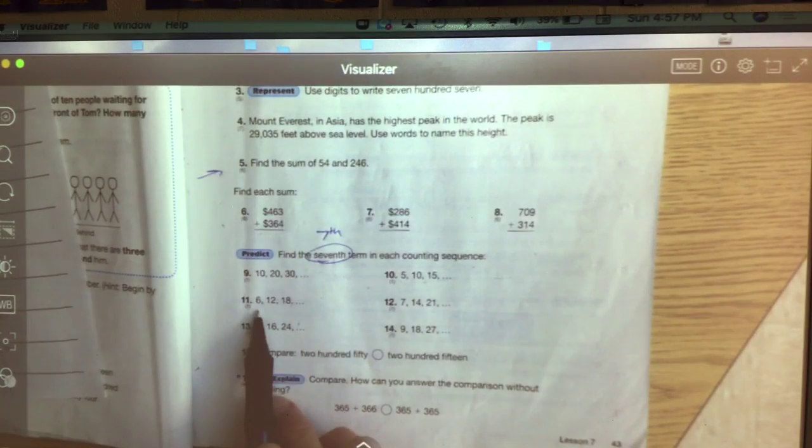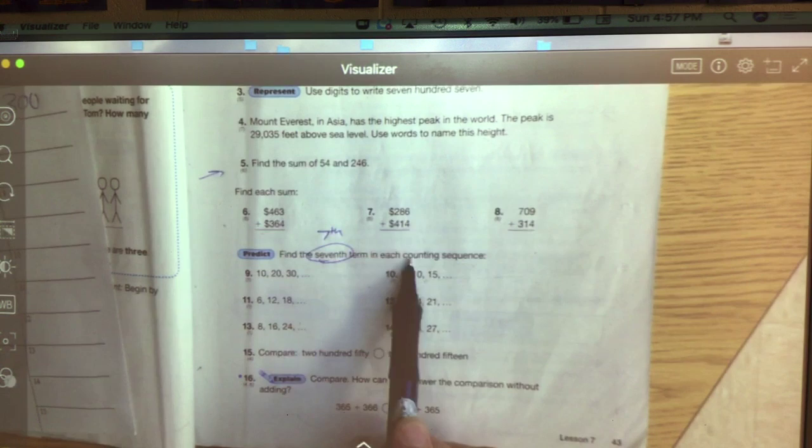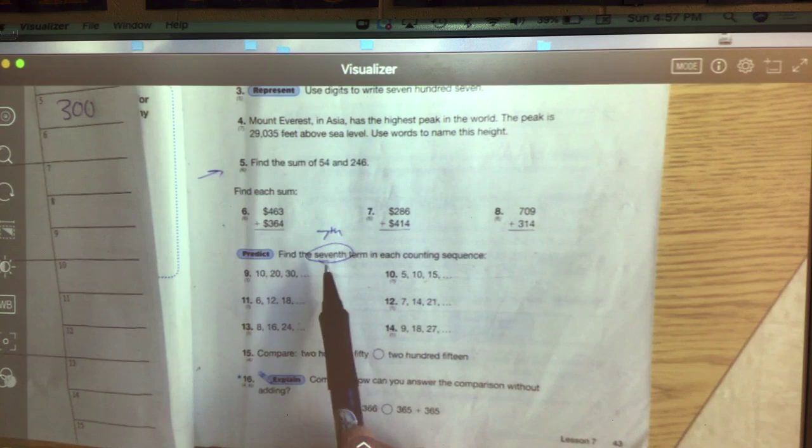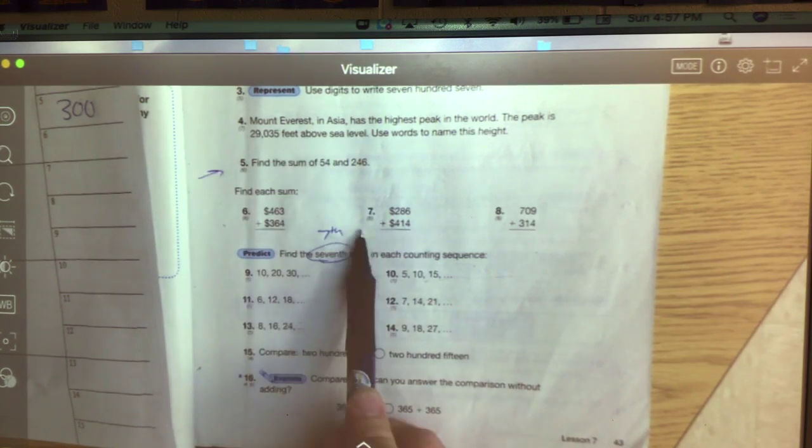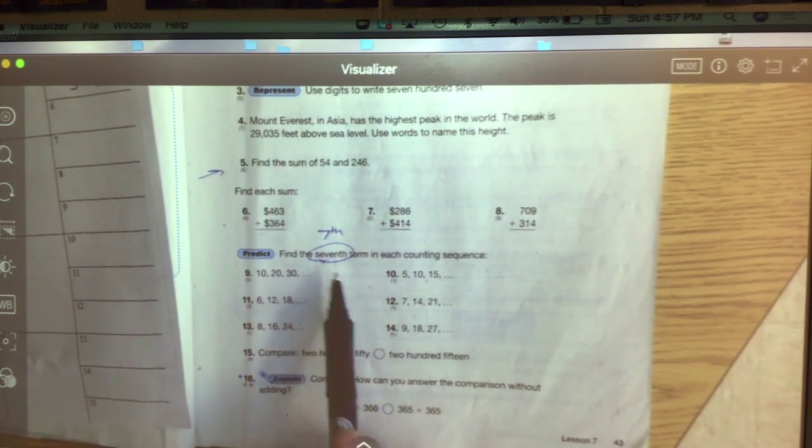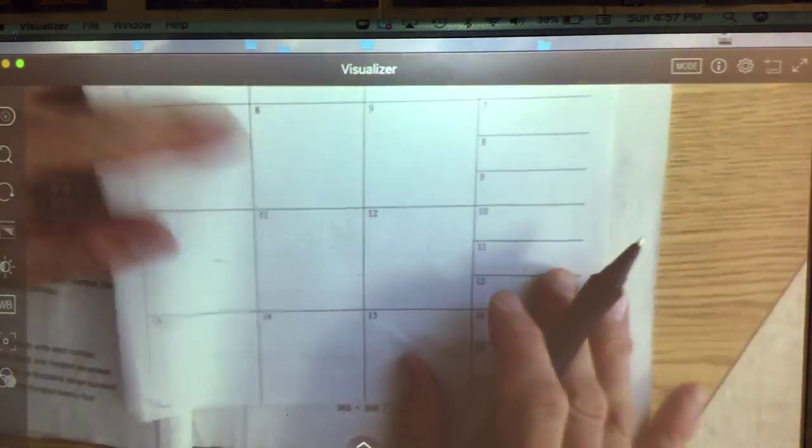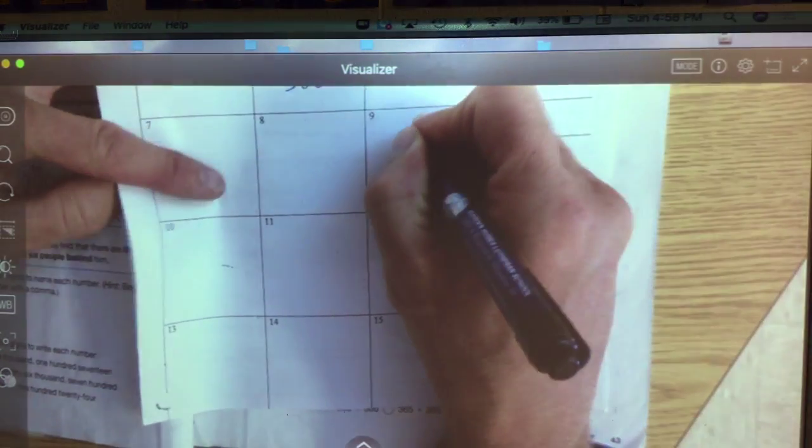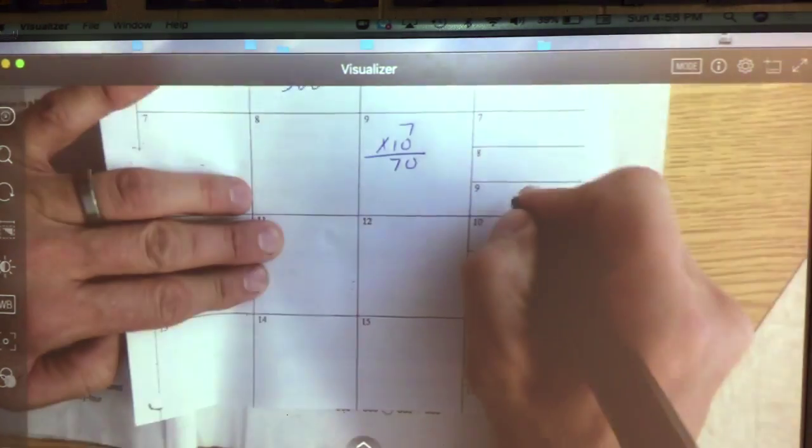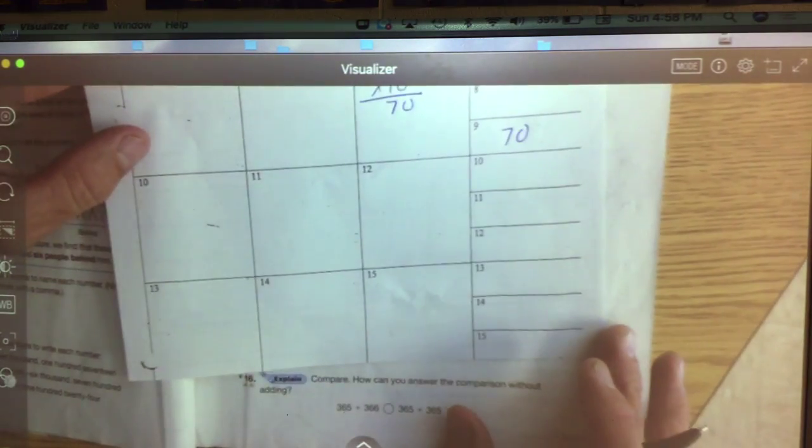Now 9, 10, 11, 12, 34, all of them have this direction. It says find the 7th term in each counting sequence. Now guys, I don't want to make this too easy, but this is really like saying first term times 7. 10 times 7 is 70. Let's check: 10, 20, 30, 40, 50, 60. The 7th term would be 70. So instead of writing all these terms out, I'm just going to take the 7th term times the first term.